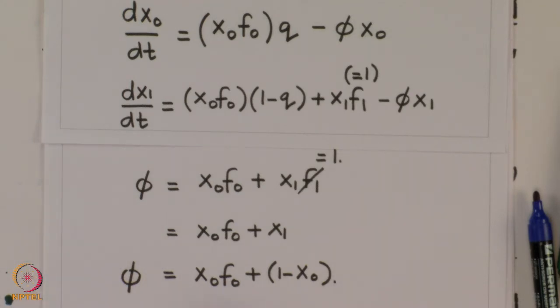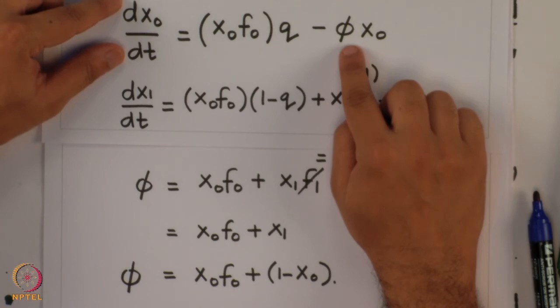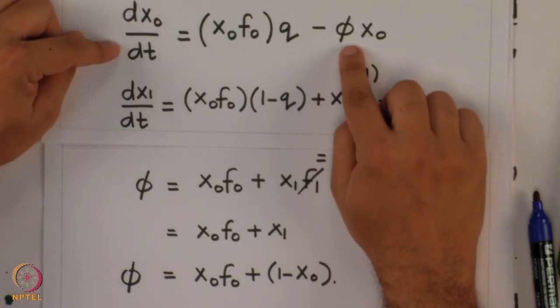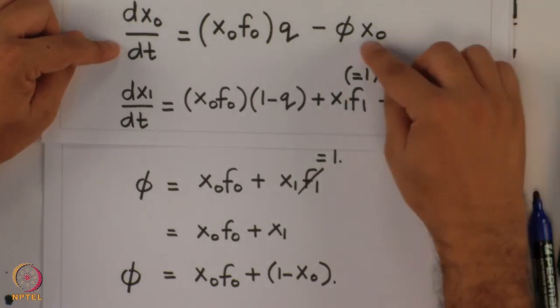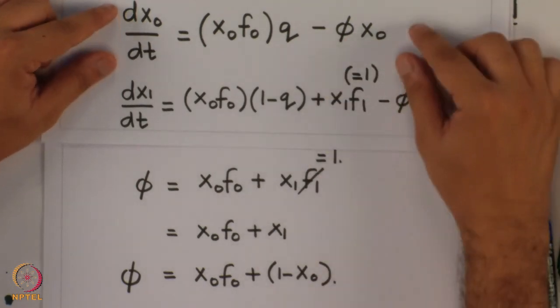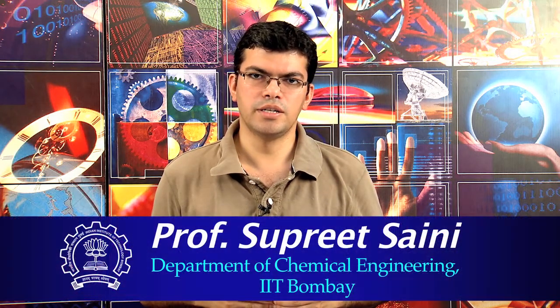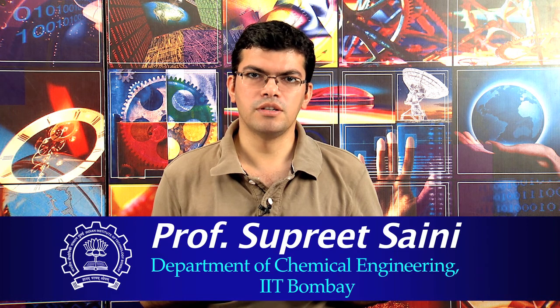Now we have the dynamical equations and phi expressed solely in terms of X_naught. By substituting the expression for phi into the equation for dX_naught/dt, we get a differential equation in X_naught alone. We will then analyze the steady states and their stability associated with this equation, which is what we will start our next lecture with. Thank you.